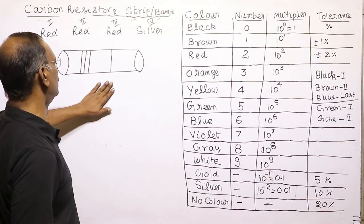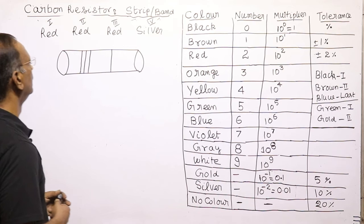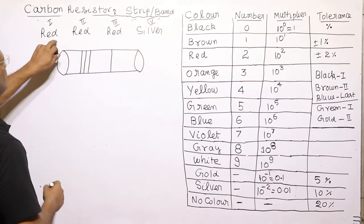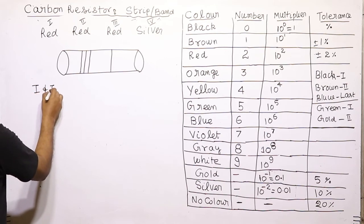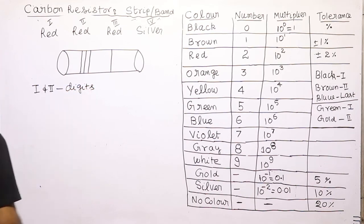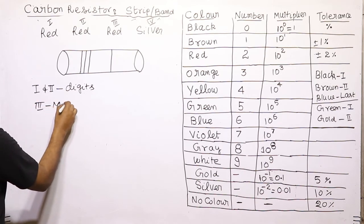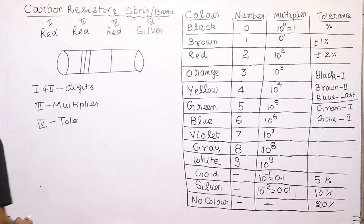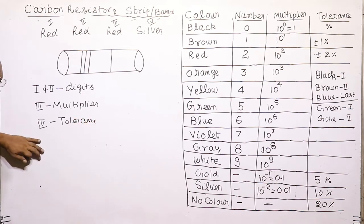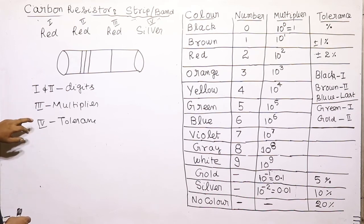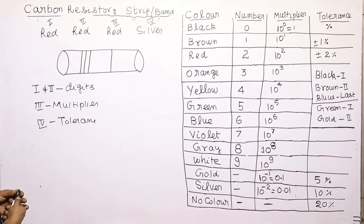In this carbon resistor there are four strips — it is a four-band carbon resistor. First is red, second is red, third is also red, and fourth is silver. Remember: the last band is always tolerance, the last-but-one band is the multiplier, and the rest are digits. In a five-band resistor, the fifth is tolerance, the fourth is multiplier, and the first three are digits.